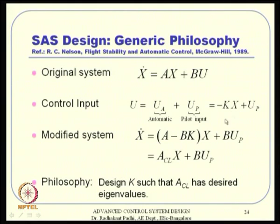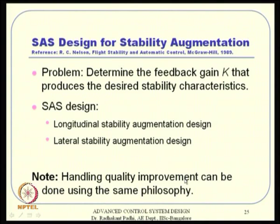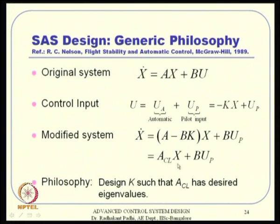The philosophy is: design part of the control automatically to alter the response characteristics. The problem reduces to determining the feedback gain K that produces the desired stability characteristics. Stability augmentation design can be done for longitudinal dynamics (longitudinal SAS) and lateral dynamics (lateral SAS). Handling quality improvement can also be done using the same philosophy, since handling quality is essentially the eigenvalues of A_CL.